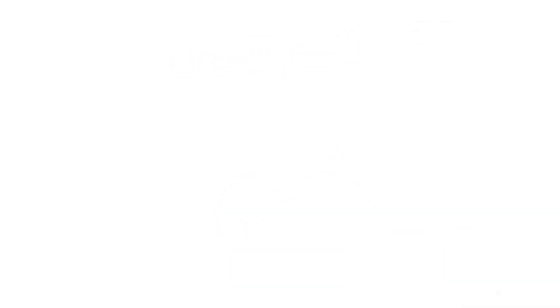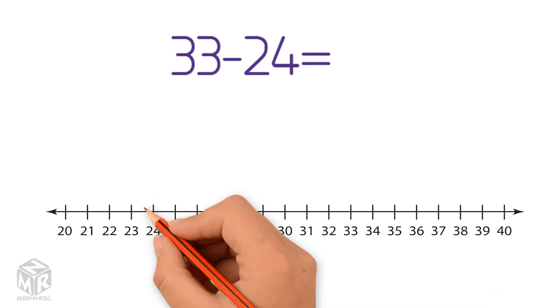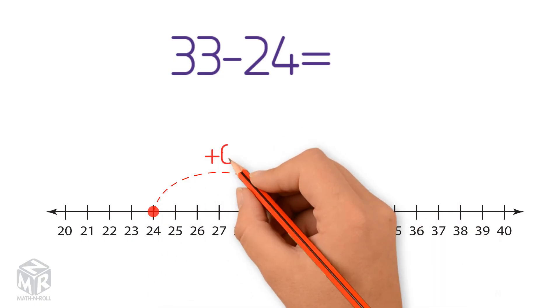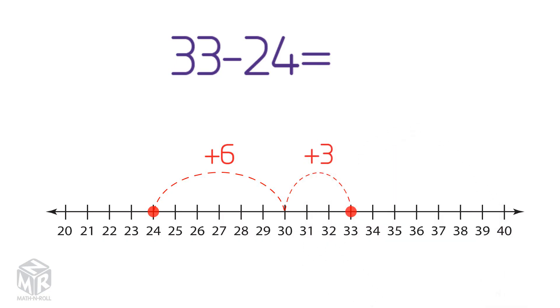Let's try another example. 33 minus 24. Let's draw it out. We start at 24 and count up 6 to 30. Then we count up 3 more to 33. 6 plus 3 equals 9. So 33 minus 24 equals 9.